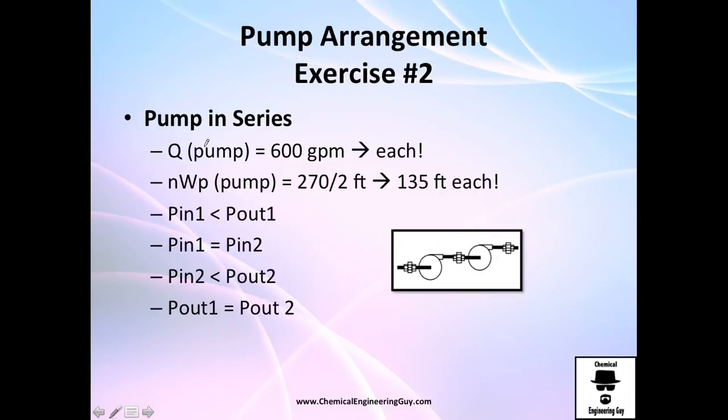Now what will happen if we do this in series? Well, the volumetric flow rate must be constant. So the only option is that we keep these 600 gallons per minute. But since we are in series arrangement, the inlet of the second one will be the outlet of the second one. So that's interesting. And this means that we are going to divide the load.